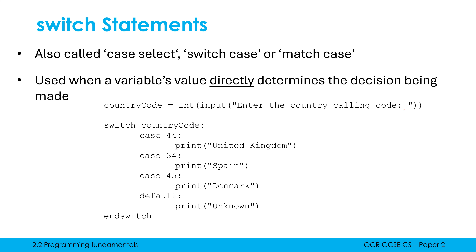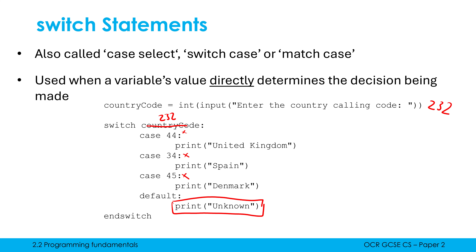If I type in the country code 232, which Google reliably tells me is Sierra Leone, it compares 232 to 44 — not equal. It compares it to 34 — not equal. It compares it to 45 — not equal. And so our program is going to say it doesn't know what this calling code refers to and it's going to run the default case.